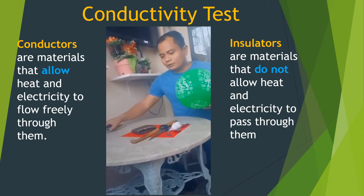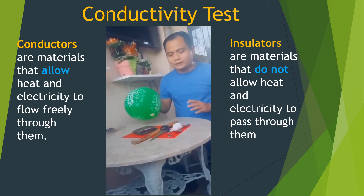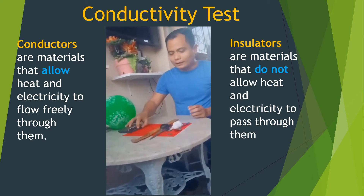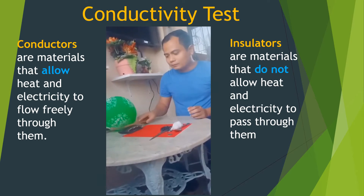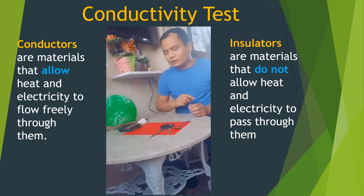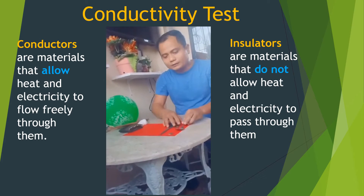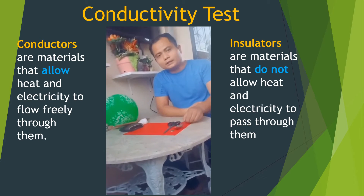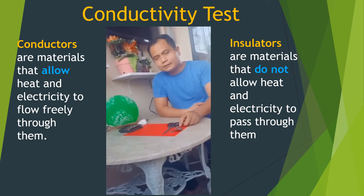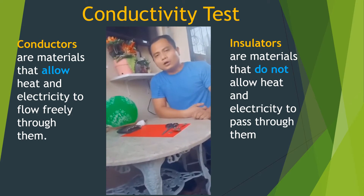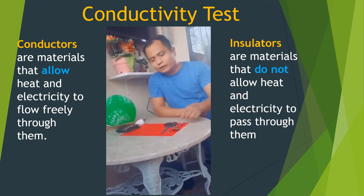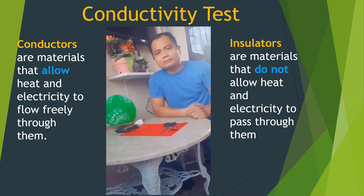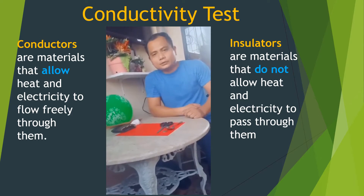Let's separate all the materials into insulators and conductors. The plastic balloon, wallet, wood stick, and cotton are examples of insulators. All metals — whether aluminum, stainless steel, or any kind of metal — are examples of conductors. Again, never insert any metals or conductors into your socket because you may get electrocuted.